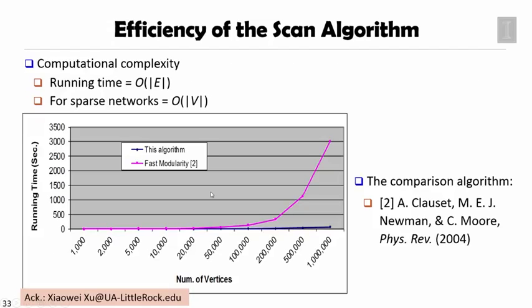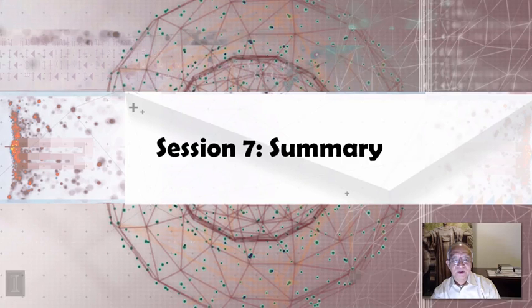This algorithm is pretty efficient because you only look at your very close neighbors instead of trying to estimate anything from the whole graph. The running time is O(|E|), the number of edges. For sparse networks, each node is not connected to too many edges, so the complexity is O(|V|), the size of vertices. If you look at the running time in real data sets, when the number of vertices grows bigger, fast modularity takes much longer time to finish. But using SCAN algorithm, it's still very efficient.